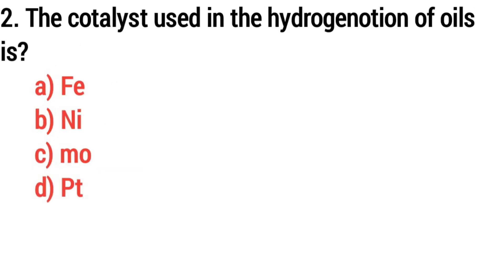Question 2. The catalyst used in the hydrogenation of wells is? Option B, Ni, Nickel.